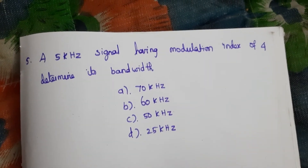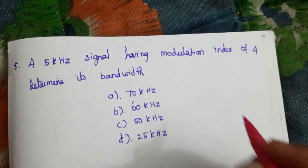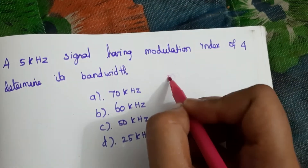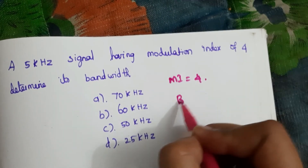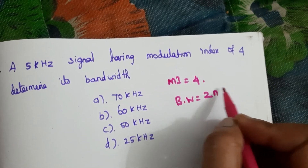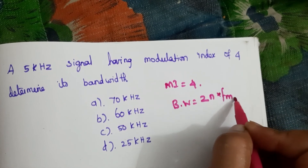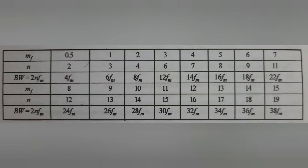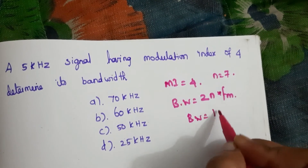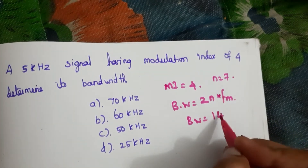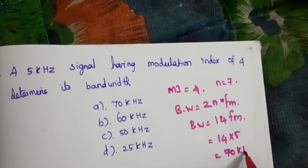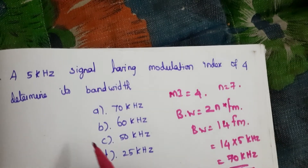Fifth question: A 5 kHz signal has a modulation index of 4; determine its bandwidth. For modulation index = 4, n = 7. Bandwidth = 2n × fm = 2 × 7 × 5kHz = 14 × 5 = 70 kHz. The answer is 70 kHz, so the answer is B.